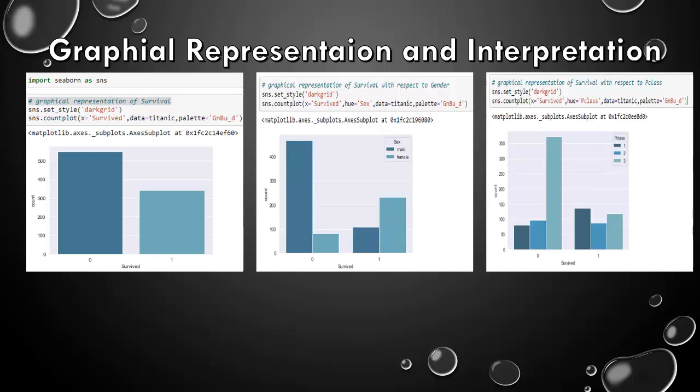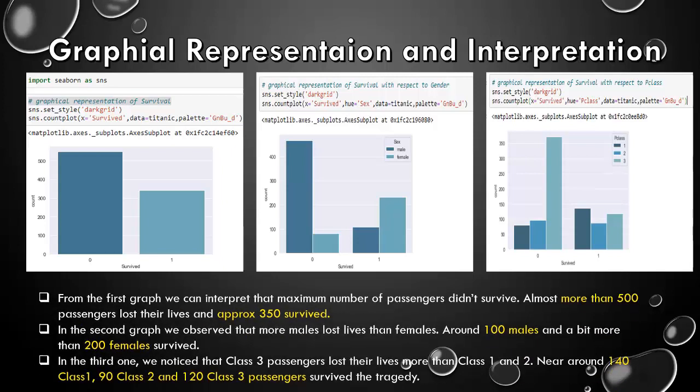Graphical representation and interpretation. These are the three graphs you can see in the description. Let's interpret them. From the first graph, we can interpret that maximum number of passengers didn't survive. Almost more than 500 passengers lost their lives and around 350 survived. In the second graph, we observe that more males lost lives than females. Around 100 males and a bit more than 200 females survived. In the third one, we notice that class 3 passengers lost their lives more than class 1 and 2. Near around 140 class 1, 90 class 2 and 120 class 3 passengers survived the tragedy.